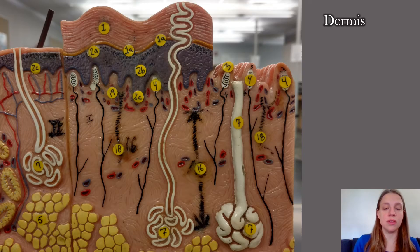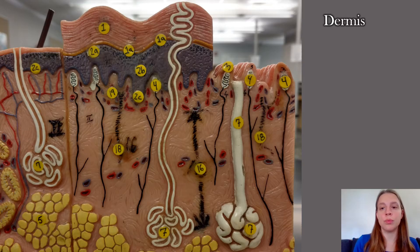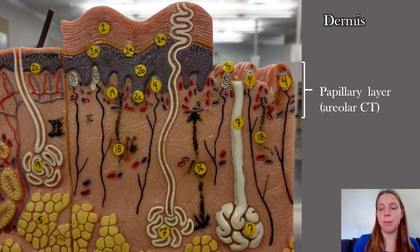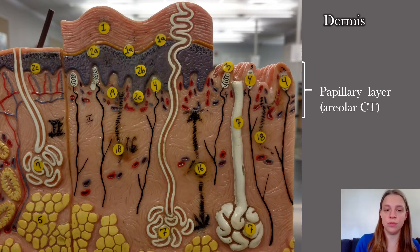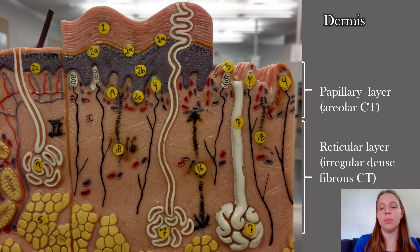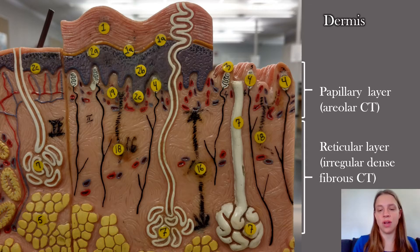The dermis is composed of two layers. The more superficial layer is the papillary layer, which is composed of areolar connective tissue. Below that is the reticular layer, which is irregular dense fibrous connective tissue.